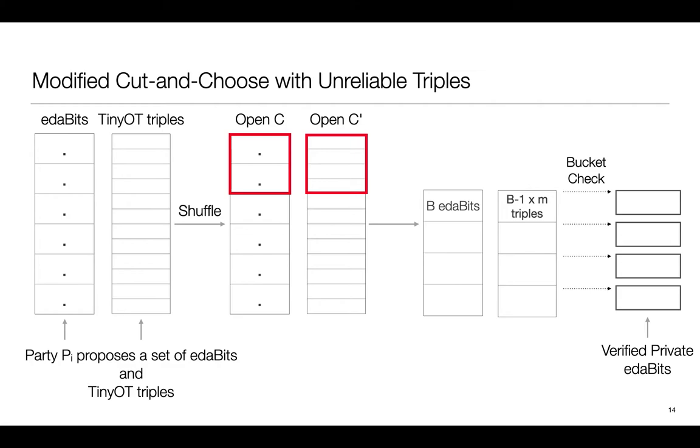So we know how to do the shuffling, we know how to do the bucketing, we also know how to go from verified private EDABITS at the end to verified global EDABITS. What we have not analyzed so far is the bucket check protocol.